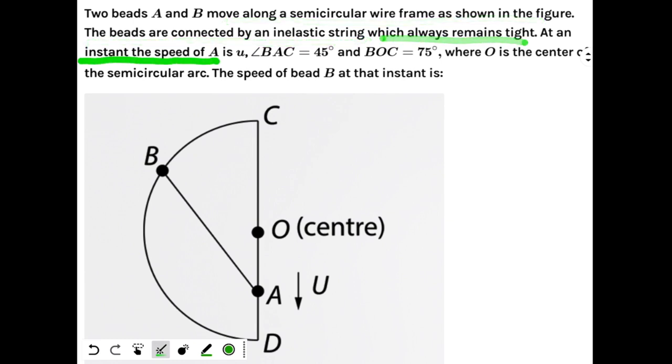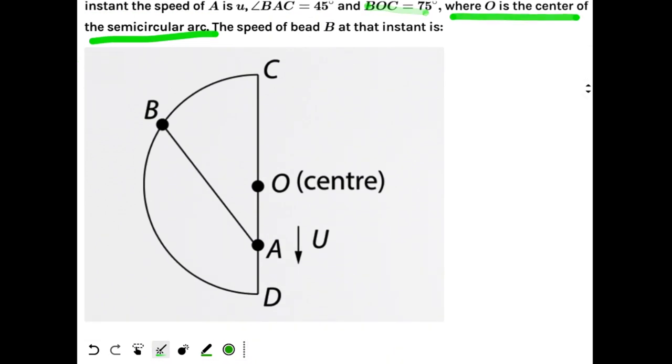At an instant, the speed of A is U, angle BAC is 45 degrees, and angle BOC is 75 degrees, where O is the center of the semicircular arc. The speed of bead B at that instant is?